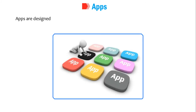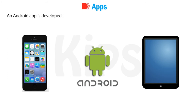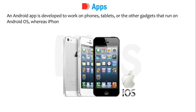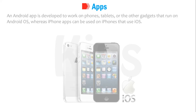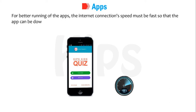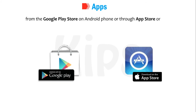Apps are designed to work on different operating systems used by various devices. An Android app is developed to work on phones, tablets, or other gadgets that run on Android OS, whereas iPhone apps can be used on iPhones that use iOS. For better running of the apps, the internet connection speed must be fast so that the app can be downloaded easily from the Google Play Store on Android phones or through the App Store on iOS.